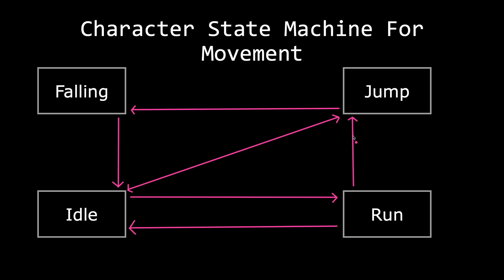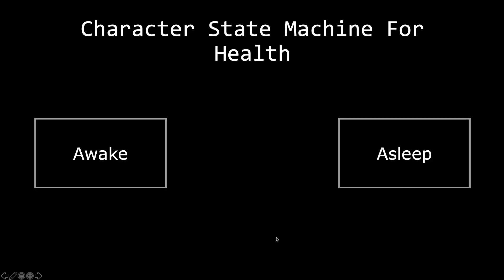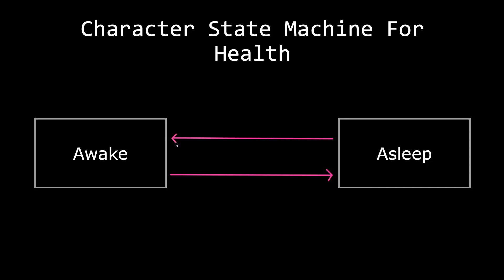Let's look at another example where we have additional states that are independent of our character movement state. We have a character state for health and we have two choices: being awake or asleep. We start in the awake state and at some point we can turn into the asleep state and vice versa. Keep in mind that even though our character has two different states, it manages the health state and the movement state. The health state is independent of the character movement state, meaning health does not directly affect the states of movement and vice versa.